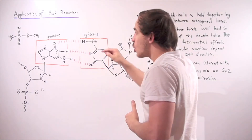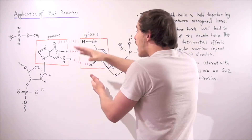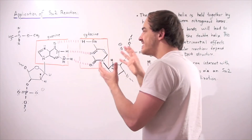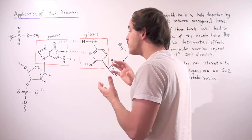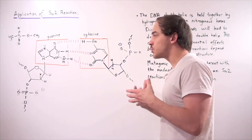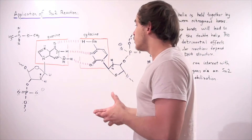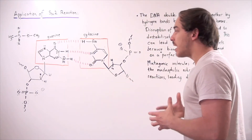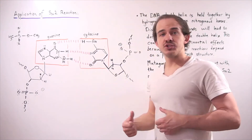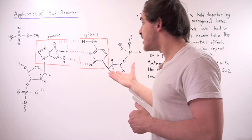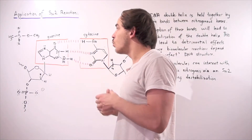If one or all of these H-bonds are broken, our entire structure will be destabilized, which is a bad thing because DNA is very important. We use DNA to create proteins, which essentially create the different types of molecules within our body. We also use it to pass down information to our kids, so any issues in our DNA will lead to problems when we reproduce.